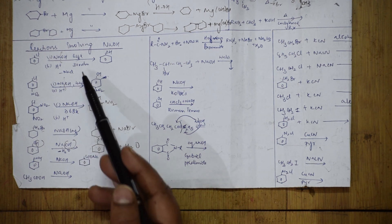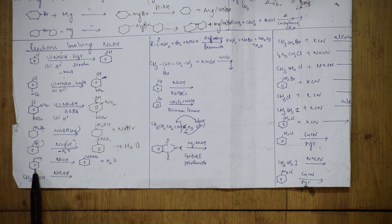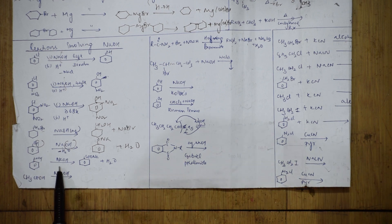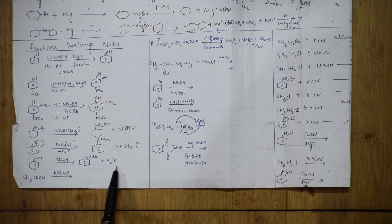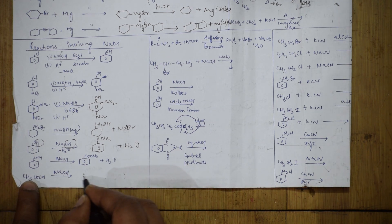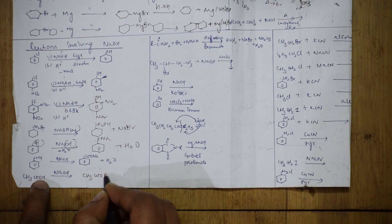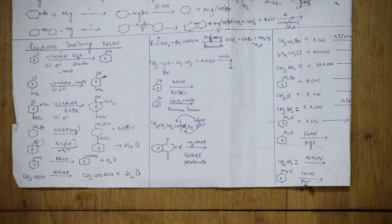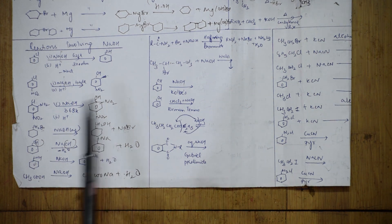If sodium hydroxide is with an acid, this is a base-acid reaction. We know acid plus base gives salt plus water. Benzoic acid with sodium hydroxide gives sodium benzoate (COO⁻Na⁺) plus water. These are all the NaOH reactions — nothing to get confused about in the exam.